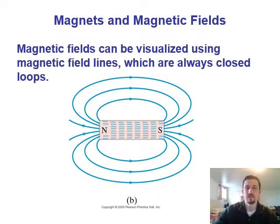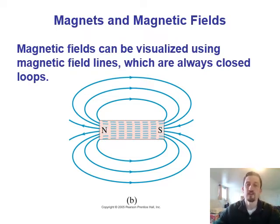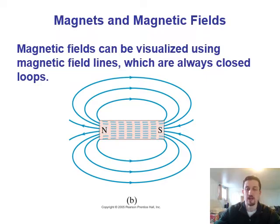To look at magnetic fields, we use something called magnetic field lines to visualize them. You can think about these very similarly to electric field lines — they give you an idea of which way the field is pointing at any given point, and how many lines there are indicates how strong the field is. For magnetic fields, the field lines are always going to be closed loops going from north to south, and you can see all the arrows pointing from north to south.